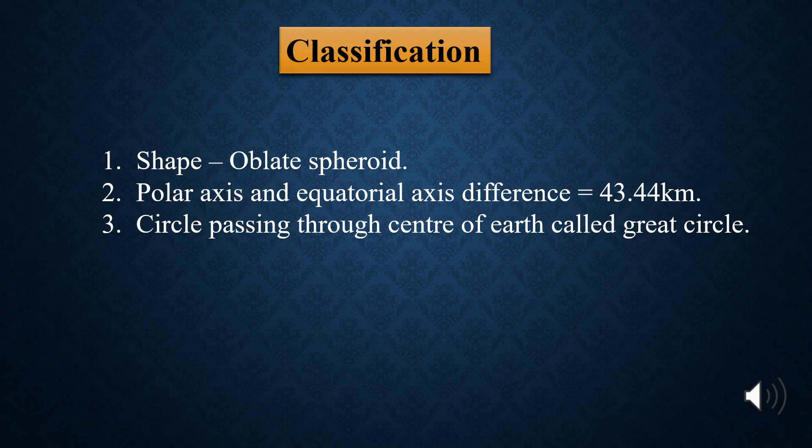Classification of surveying. To classify surveying, first we need to know about the earth. The shape of earth is oblate spheroid. The average radius of earth is 6370 km. There are two axes in case of earth: polar axis and equatorial axis. Polar axis is the vertical axis and equatorial axis is the horizontal axis.